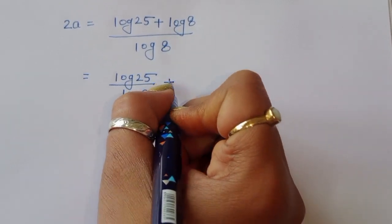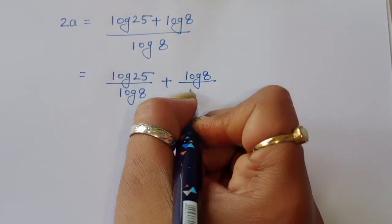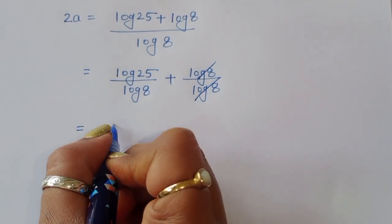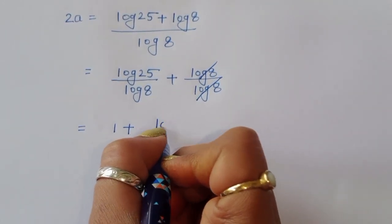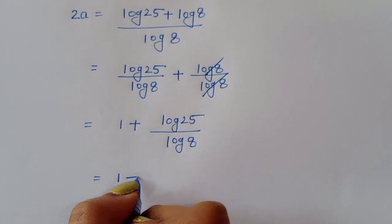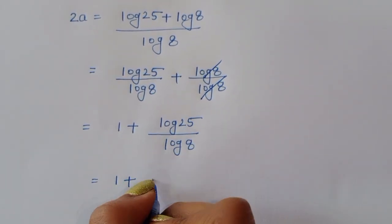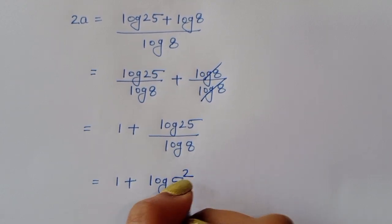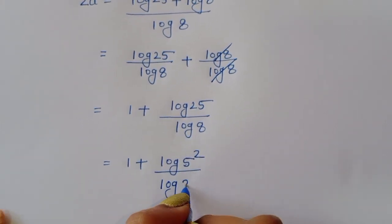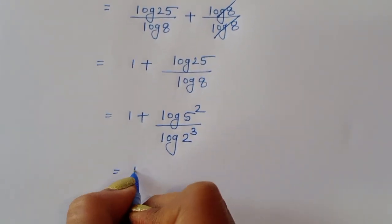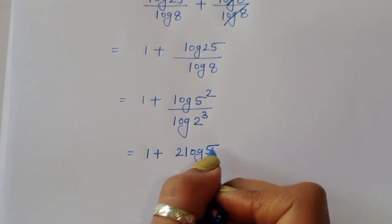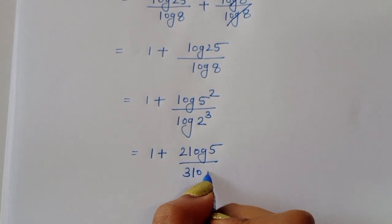Separating the terms: 2a equals log of 25 divided by log of 8, plus log of 8 divided by log of 8. Log of 8 over log of 8 cancels to 1, so 2a equals 1 plus log of 25 divided by log of 8. Now 25 is 5 squared and 8 is 2 cubed, so we write log of 5 squared over log of 2 cubed.